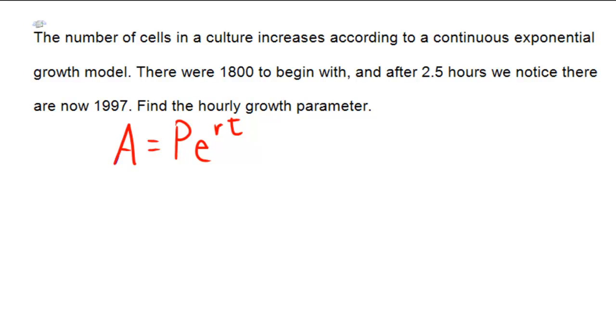We're going to plug in the given information. First off, the problem says that there were 1800 to begin with, so that's a beginning number. Then it says that there were 1997 at the end, so that would be the aggregate amount, the 1997.